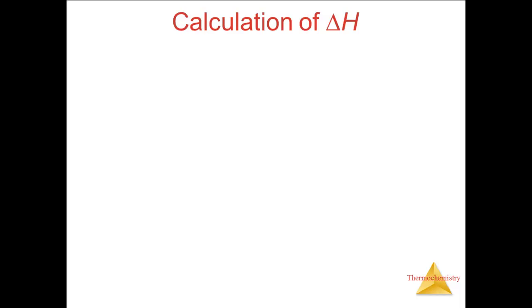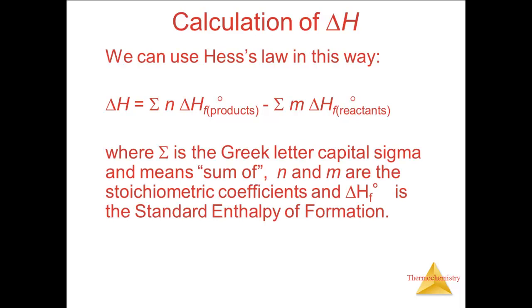This leads us to the following equation for calculating the delta H for a reaction without doing Hess's law fully. The symbol sigma means sum, adding the values. The n and m are the coefficients of the substances in the balanced equation, and the delta H0F is the standard enthalpy of formation for the substance.